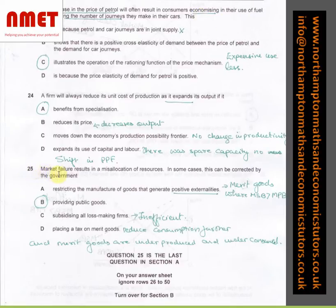In question number 25, market failure results in a misallocation of resources. In some cases, this can be corrected by the government by providing public goods. What I've done is I've explained using process of elimination why A is not the answer. As I've said, merit goods, where MSB is greater than MPB, and we have positive externalities. In C, subsidizing all loss-making firms is inefficient. D, placing a tax on merit goods reduces consumption further, and merit goods are underproduced and underconsumed.